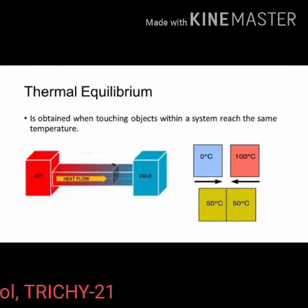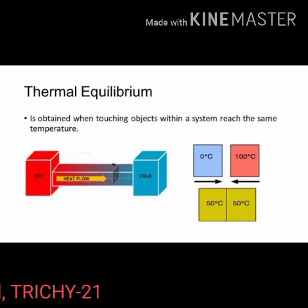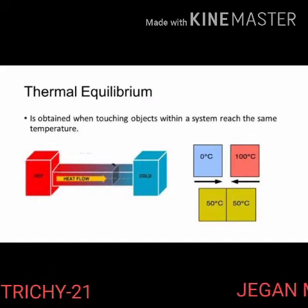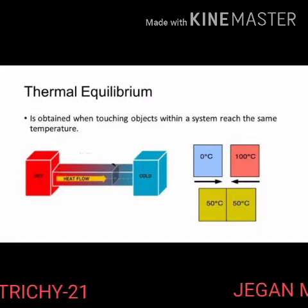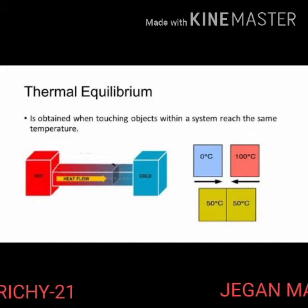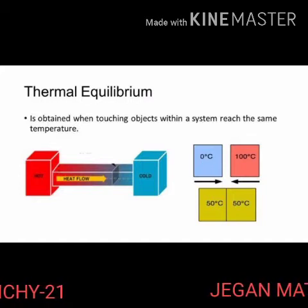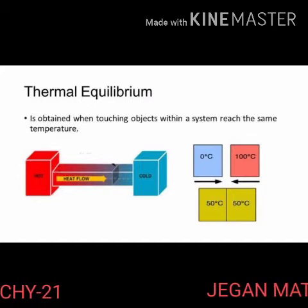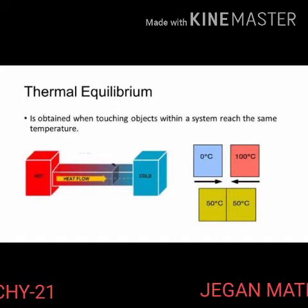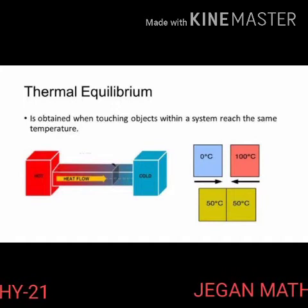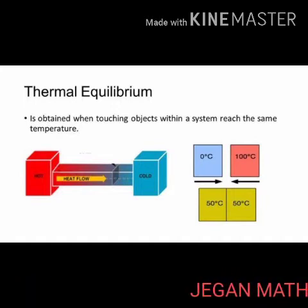For example, if a pot of milk from the refrigerator is set on the kitchen table, the two objects are in thermal contact. After a certain period, their temperatures become the same and they are said to be in thermal equilibrium.